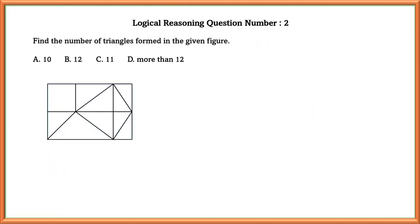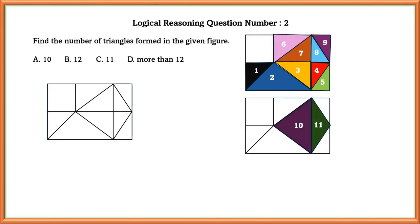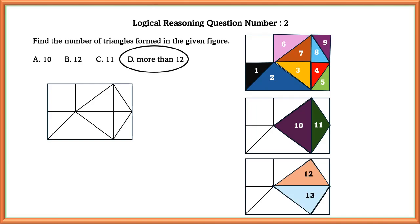Logical reasoning question number 2. Find the number of triangles formed in the given figure. Let us count them. 1, 2, 3, 4, 5, 6, 7, 8, 9, 10, 11, 12, 13. So there are more than 12 triangles formed in the given figure.